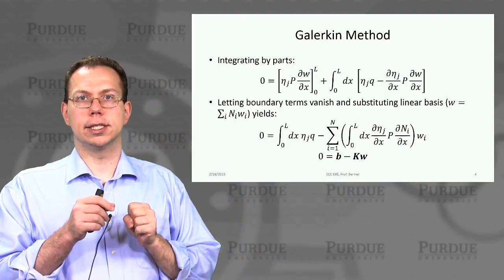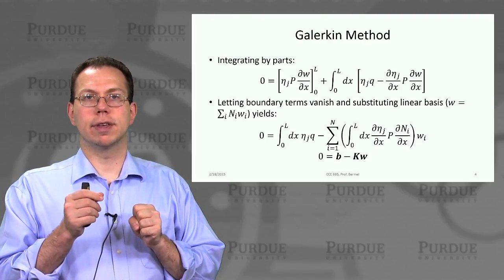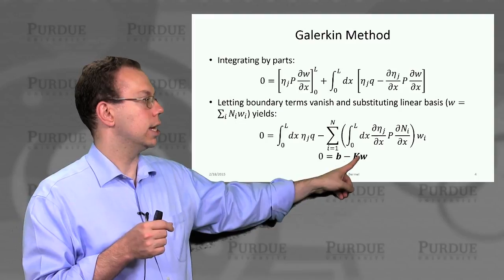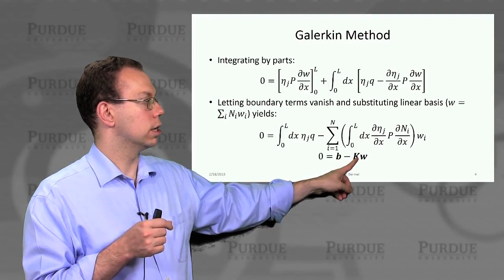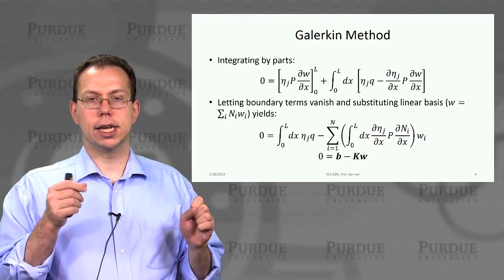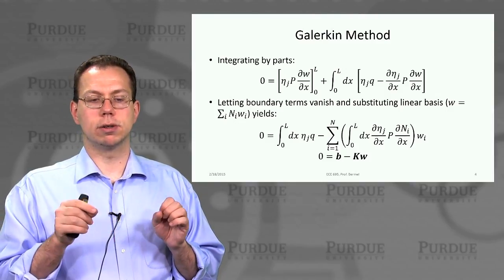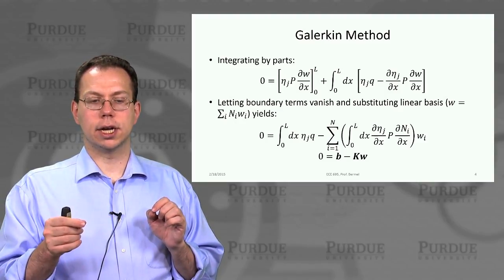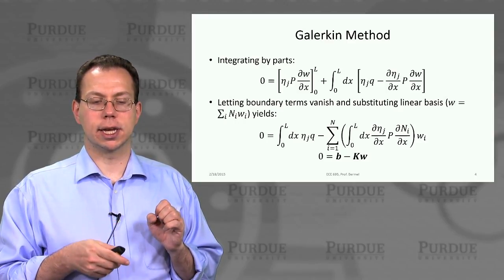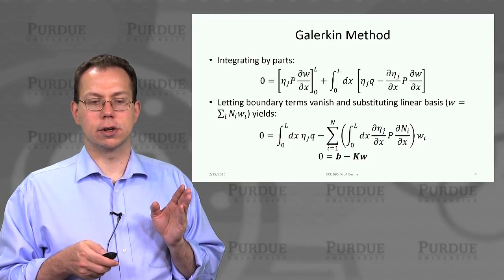In Einstein's notation, if you repeat an index, that's a summation. We can think of that as a matrix multiplication. So we write b as a column vector, k as a square or rectangular matrix, and w as a column vector. If you have more fingers, so more j's, that gives us a better solution. We now have everything written in a linear algebra type form.